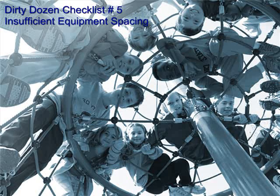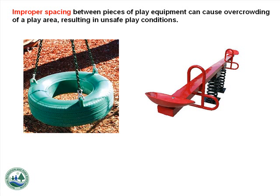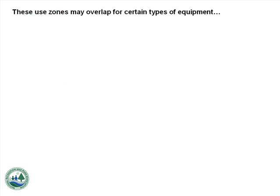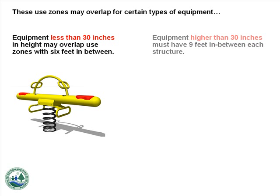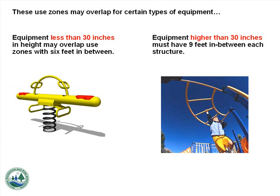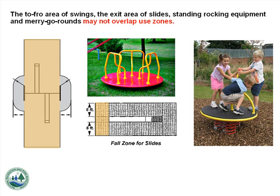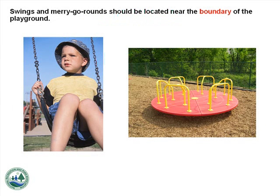Number 5: Insufficient Equipment Spacing. Improper spacing between pieces of play equipment can cause overcrowding and unsafe play conditions. Each item of play equipment has a use zone where protective surfacing is applied. Equipment less than 30 inches in height may overlap use zones with 6 feet in between. Equipment higher than 30 inches must have 9 feet in between each structure. The to-and-fro area of swings, the exit area of slides, standing rocking equipment, and merry-go-rounds may not overlap use zones. Swings and merry-go-rounds should be located near the boundary of the playground.